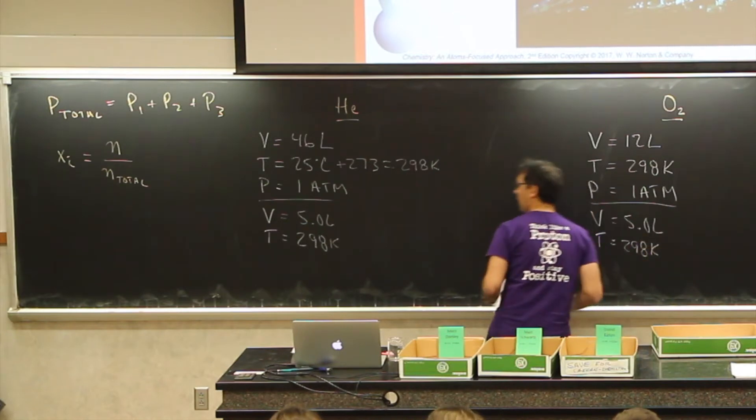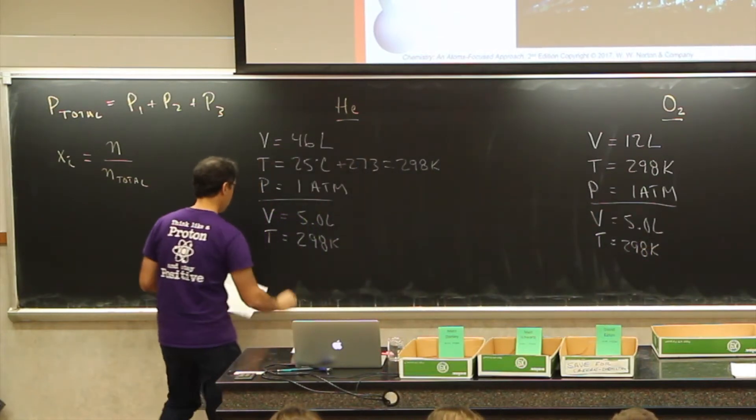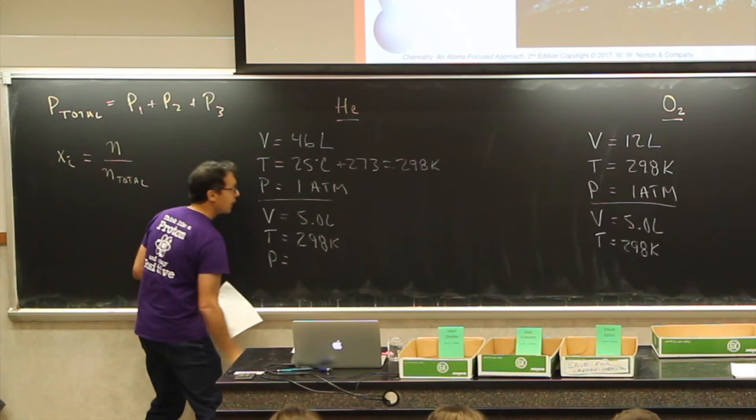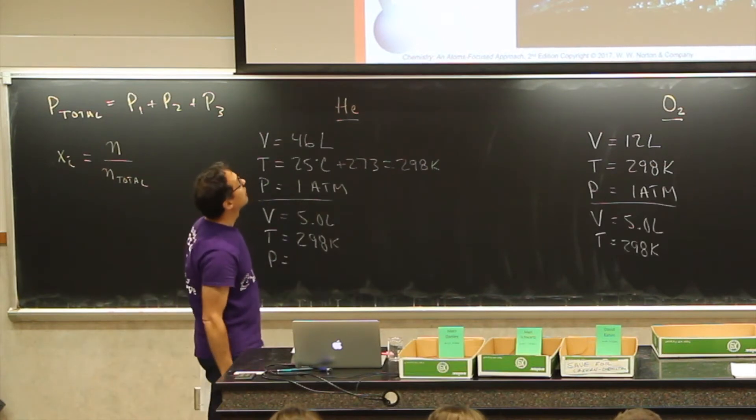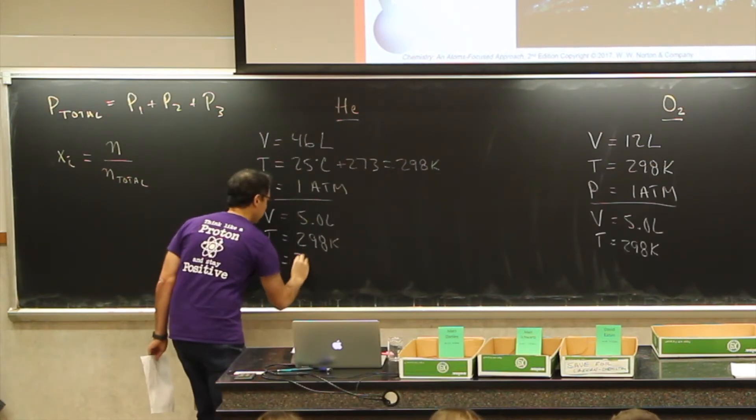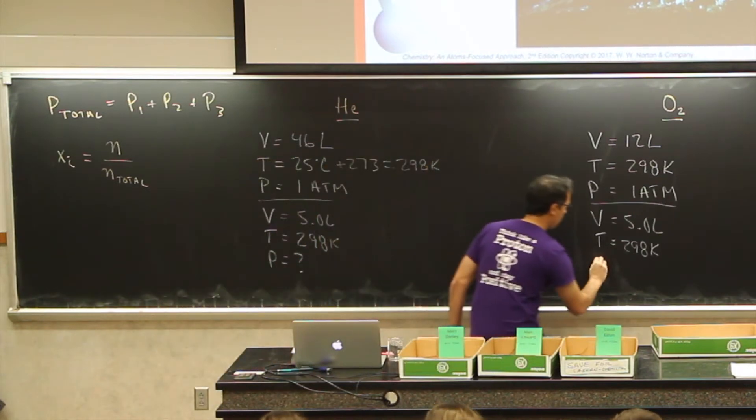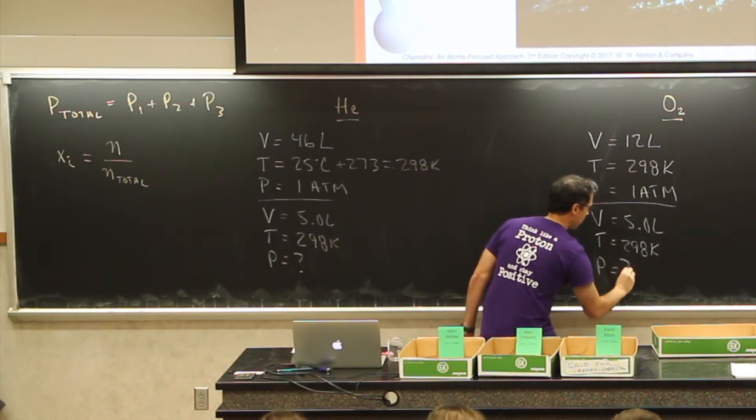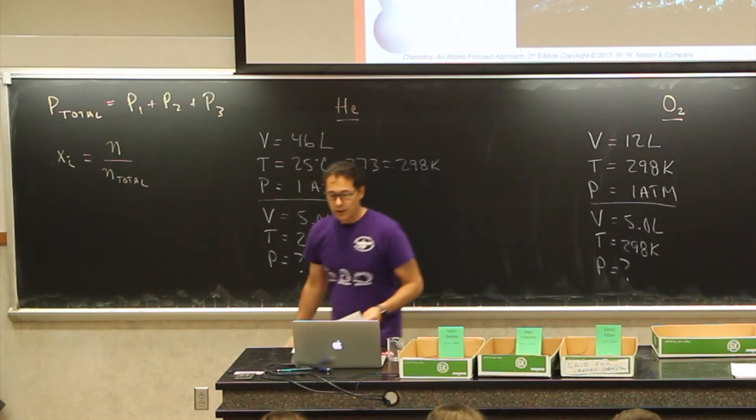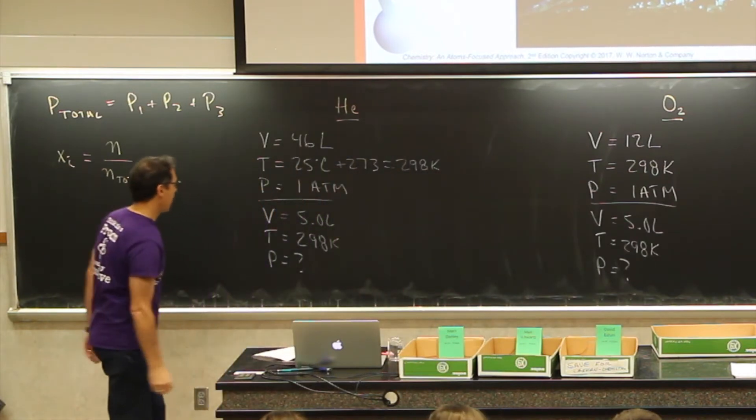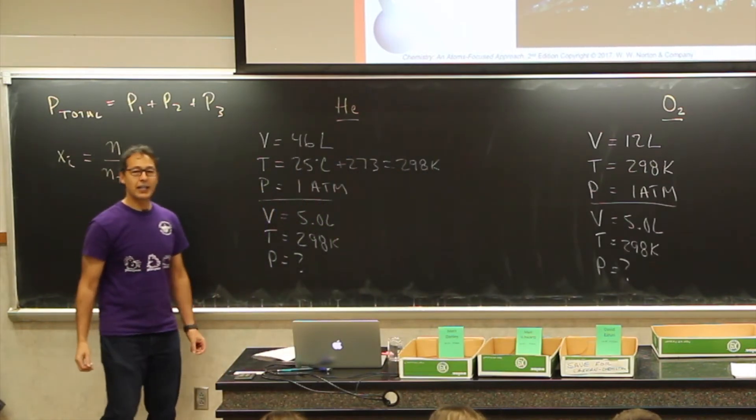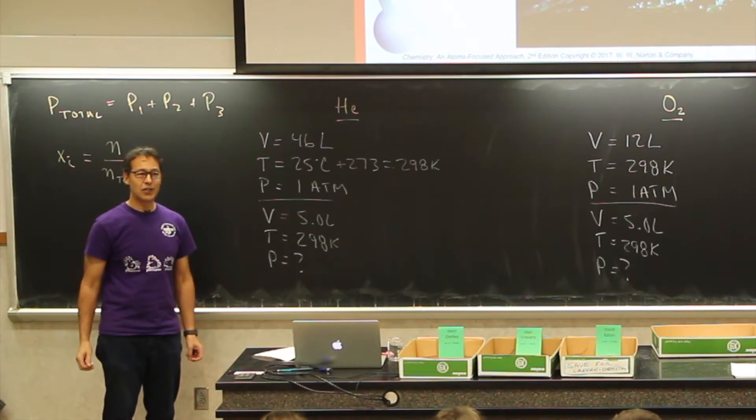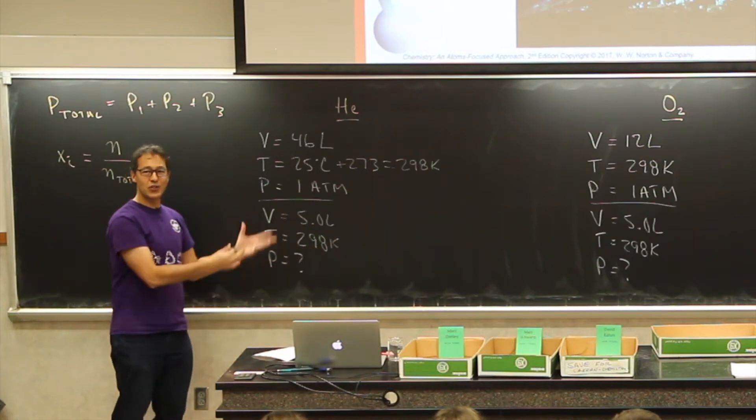I'll take a look here at my oxygen. With my oxygen, I've got my volume equal to 12 liters. My temperature is the same, 298 Kelvin. My pressure is one atmosphere. That's the gas before I put it into the tank. When I put that into my scuba diving tank, my volume becomes 5 liters. Temperature is the same, 298 Kelvin. My pressure - calculate the pressure. That's something I've got to figure out.